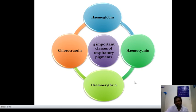There are four important classes of respiratory pigments: hemoglobin, hemocyanin, hemerythrin, and chlorocruorin.